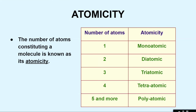We were looking at so many examples and saw that some molecules are made up of single atoms, some are made up of 2, 3, 4 or even 8. So we have a term called atomicity — it is basically the number of atoms constituting a molecule. If a molecule is made up of a single atom, it is called monoatomic. If it is made up of 2 atoms, we call it diatomic. If it is 3 atoms, it is triatomic. For 4, we say tetraatomic. And for 5 and more, we use the common term polyatomic.